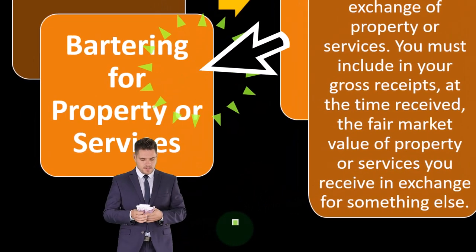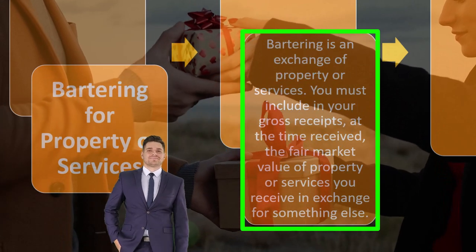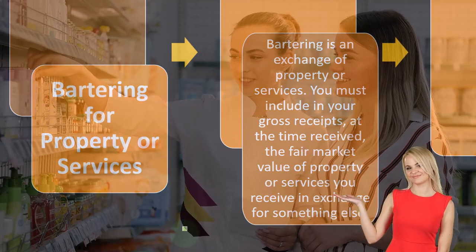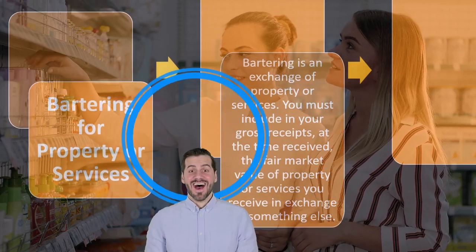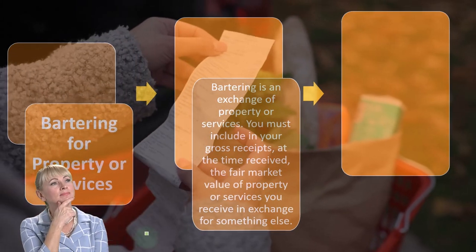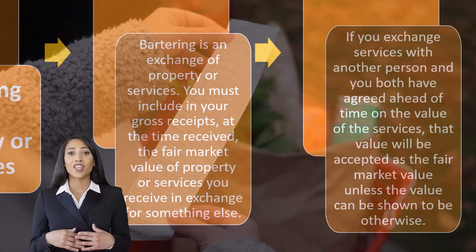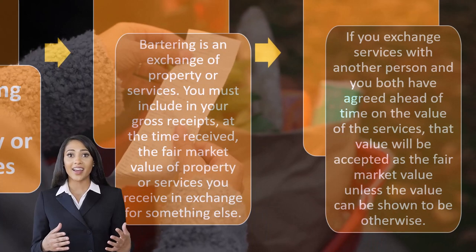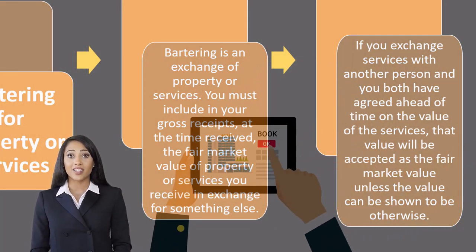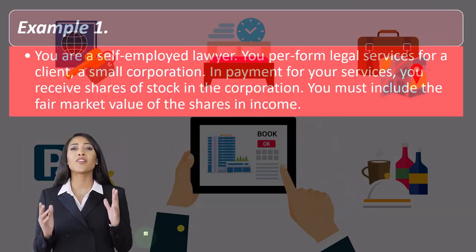Bartering is an exchange of property or services. You must include in your gross receipts, at the time received, the fair market value of property or services you received in exchange for something else. If you exchange services with another person and you both agreed ahead of time on the value of the services, that value will be accepted as the fair market value unless the value can be shown to be otherwise.